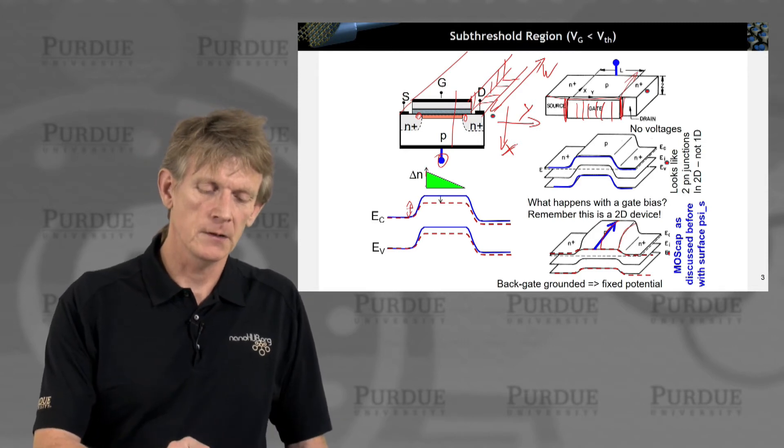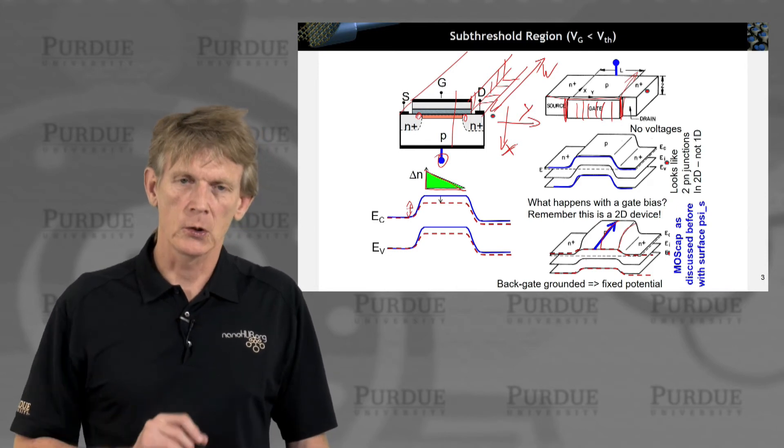Now, if you squint a little bit and forget about this being a 2D type system, what you will remember, this looks like a PN diode in one direction. And if you look overall,